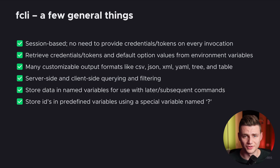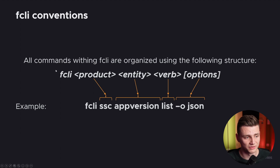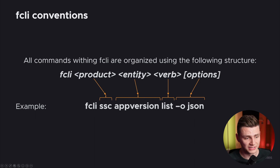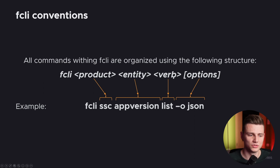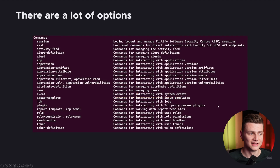When it comes to how to use fcli, all commands are organized using the following structure: first we have fcli, then the product — in this case SSC — then an entity such as app version, role, user, or token depending on the product, and then the verb — what you want to do — like list, remove, or add. Then you can also add options like outputting everything as JSON.